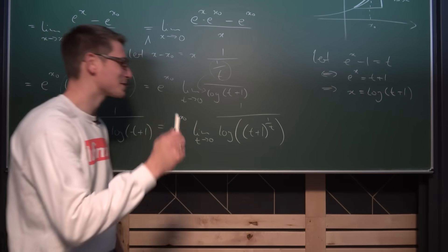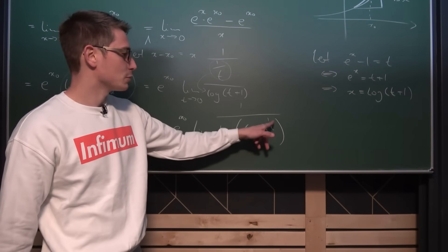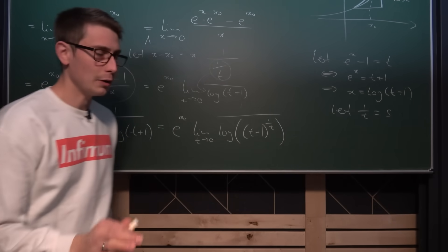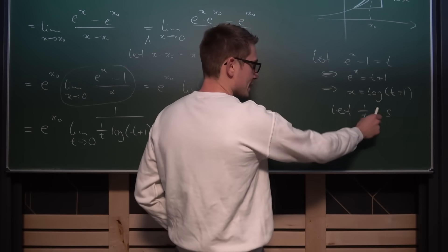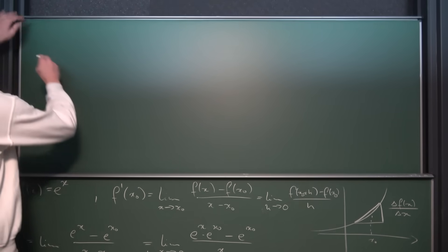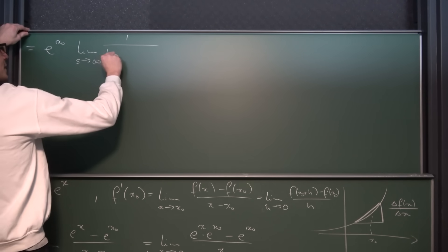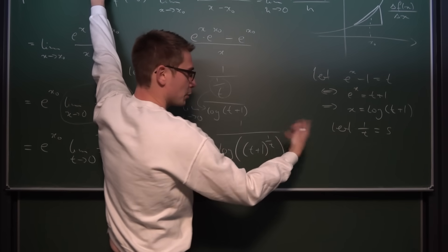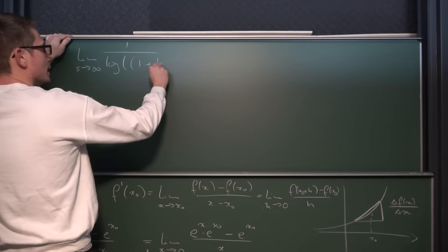Now we introduce one more substitution: let 1/t equal s. As t goes to 0, s goes to infinity. So t equals 1/s and 1/t equals s. Our new limit becomes e^(x0) times the limit as s approaches infinity of 1 divided by ln of (1 + 1/s)^s.